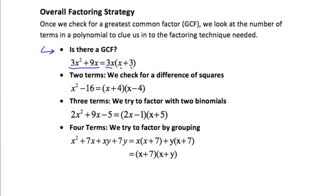Once we get done checking for a greatest common factor, the number of terms guides our factoring. If we have two terms, we check to see if we have a difference of squares. A difference of squares means we have subtraction, and this only works if there's subtraction. Both terms must be perfect squares. Here x squared is a perfect square — x times x — and 16 is also a perfect square — 4 times 4. So we have a difference of squares, which factors into x plus 4 and x minus 4.